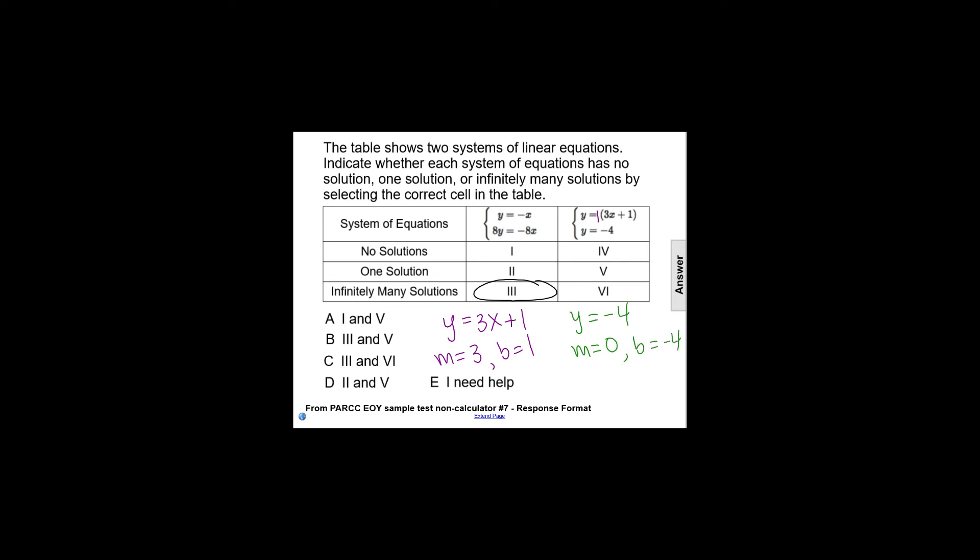So comparing these two equations, we can automatically see they have different slopes. One has a slope of 3, and one has a slope of 0. So that means it doesn't even matter what their y-intercepts are. If they have different slopes, they're different lines that will intersect in one point. So there's going to be exactly one solution to that system.